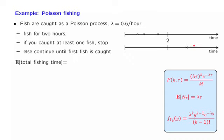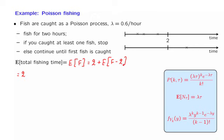Finally, let us look at a different type of question: what is the expected value of the total time that you get to fish? Let us call the total fishing time F. The total fishing time consists of two pieces: the time up to two, which you fish no matter what, and then the remaining fishing time after time two.